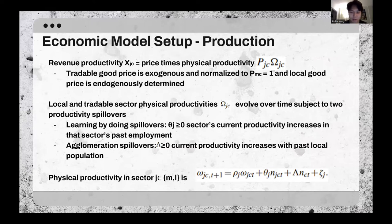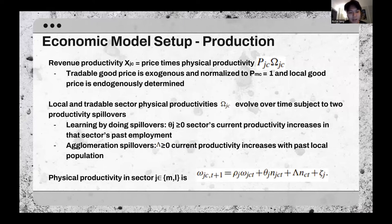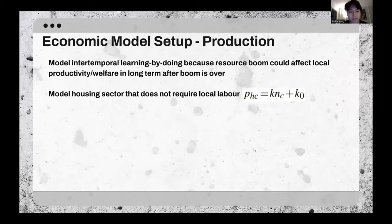The first productivity spillover is learning by doing, where the sector's current productivity increases due to the sector's past employment — getting more productive due to experience. The second one is agglomeration spillovers, where current productivity increases with past local population and the local concentration of these industries. The physical productivity in the sector can be modeled with the following equations.